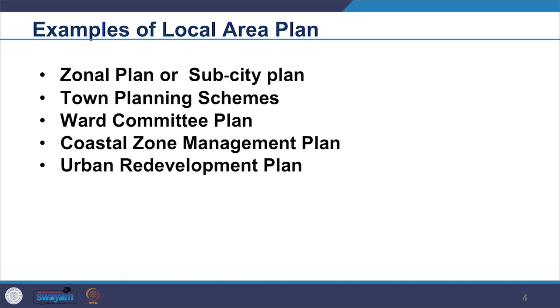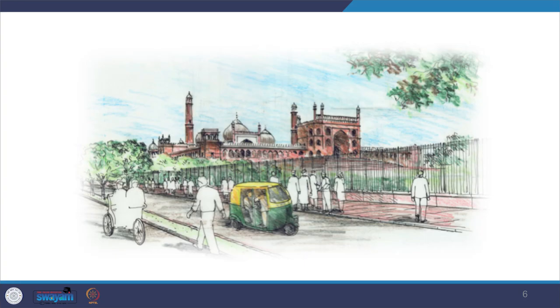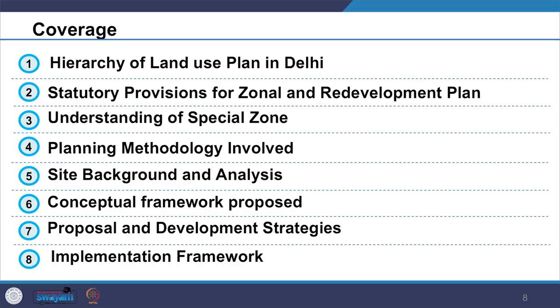Today we will look at the case example for urban redevelopment plan. As an example, we are going to look at the case of Jama Masjid precinct redevelopment prepared in 2006. The plan was prepared by Pradeep Sachdeva Design Associates for the Municipal Corporation of Delhi. The coverage of this session will include hierarchy of land use plan in Delhi, statutory provision for zonal plan and redevelopment plan, understanding of special zone, planning methodology, site background and analysis, conceptual framework proposed, proposal and development strategies, and implementation framework.